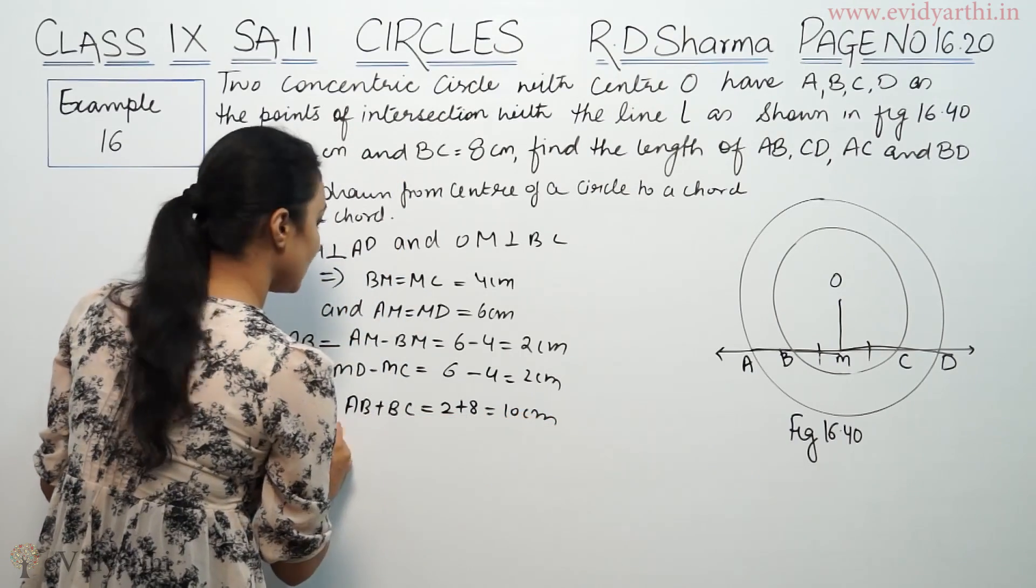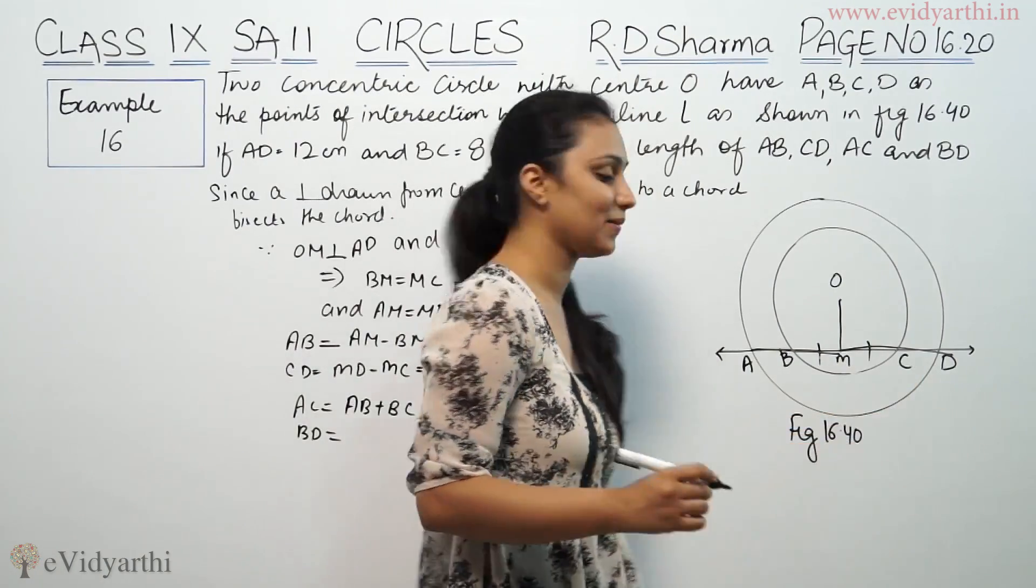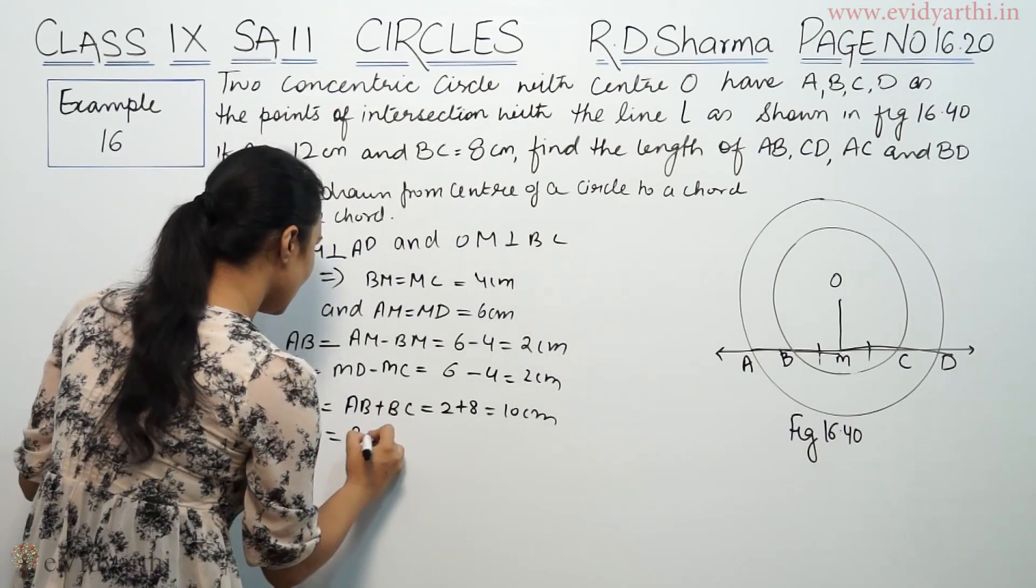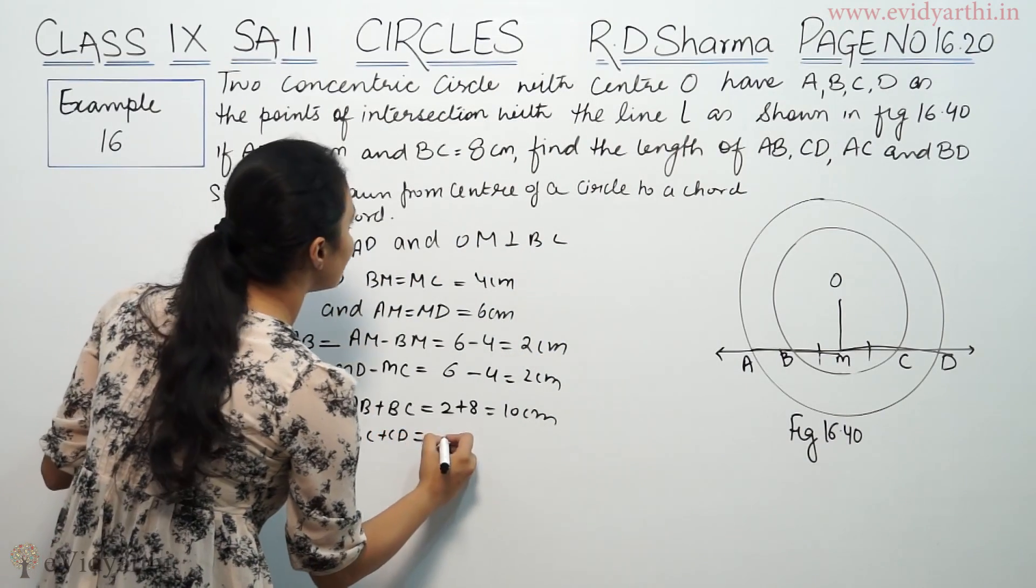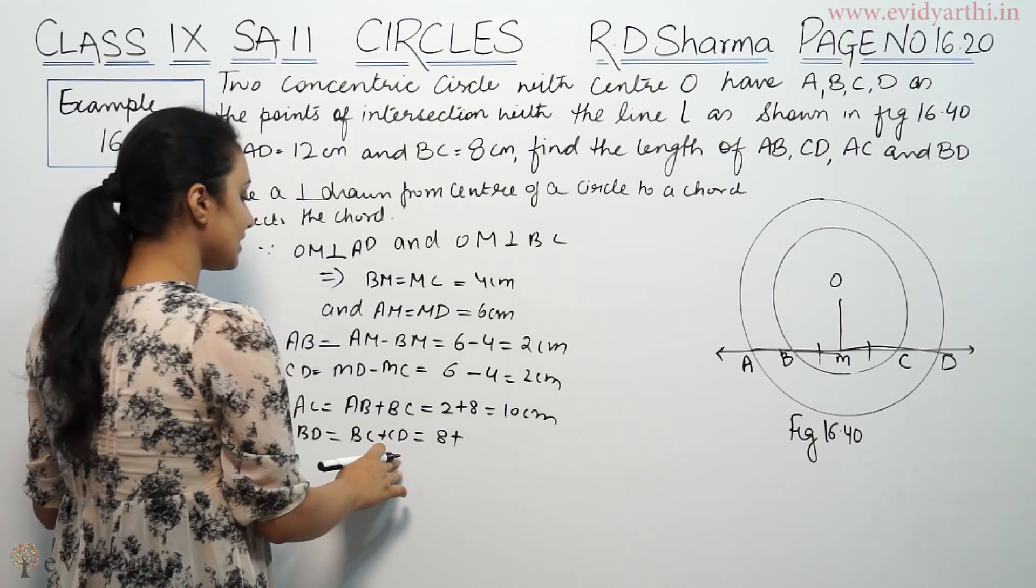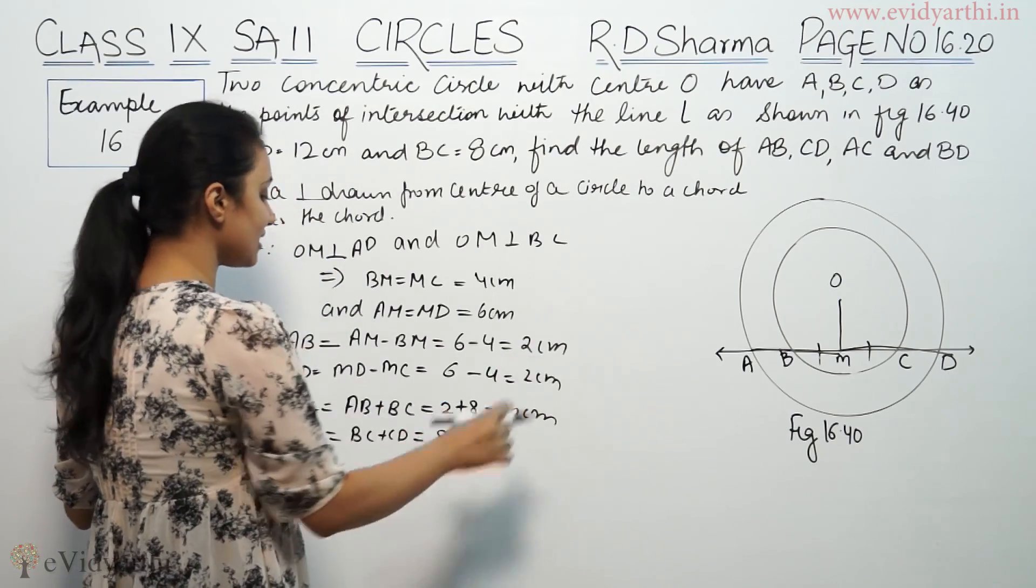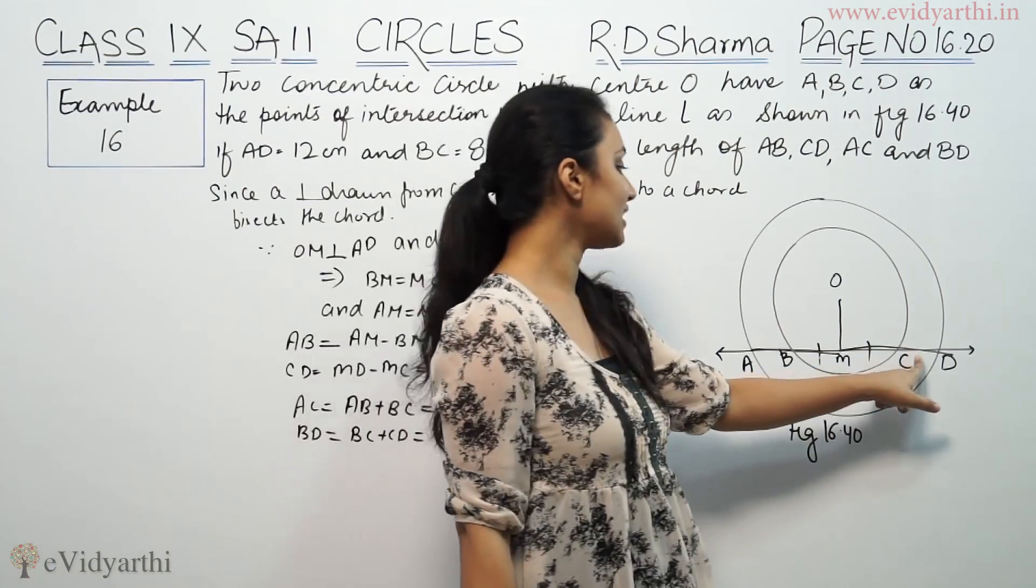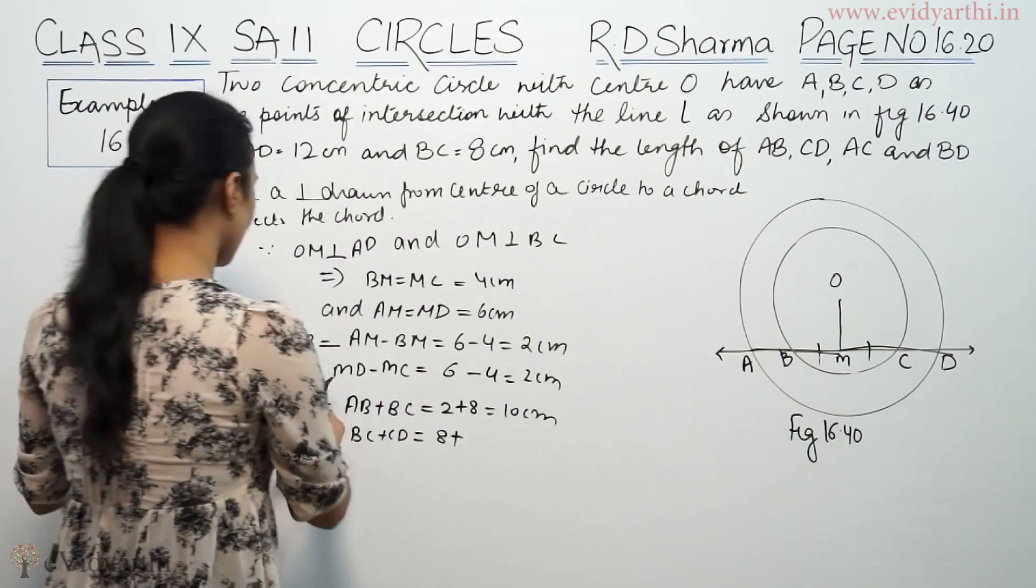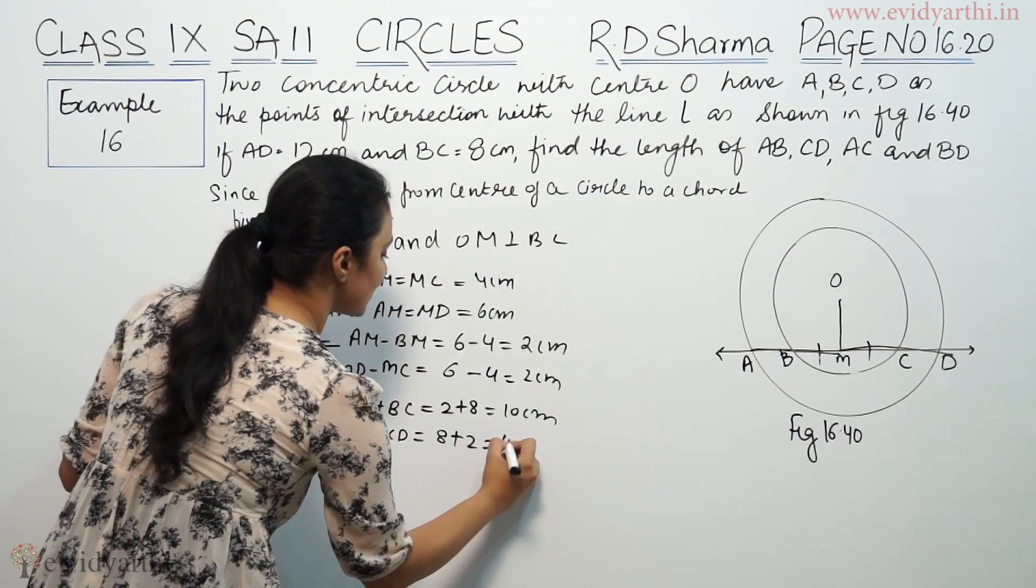Now BD, BD length is BC plus CD. BC length is 8 and CD length is 2 cm, so this is 10 cm.